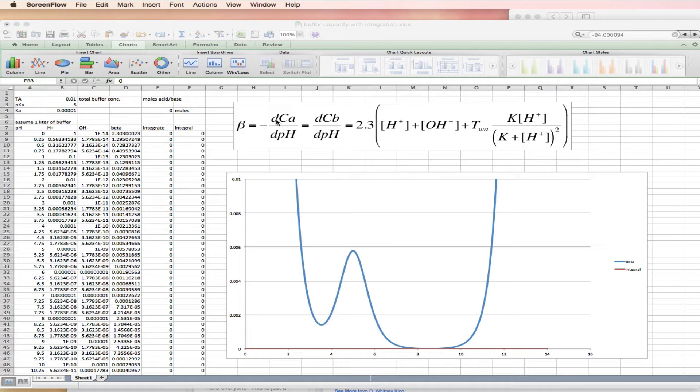The buffer capacity is equal to negative DCA, and CA is going to be the concentration of added strong acid, DPH. So as you add acid, the pH goes down, thus the negative sign.